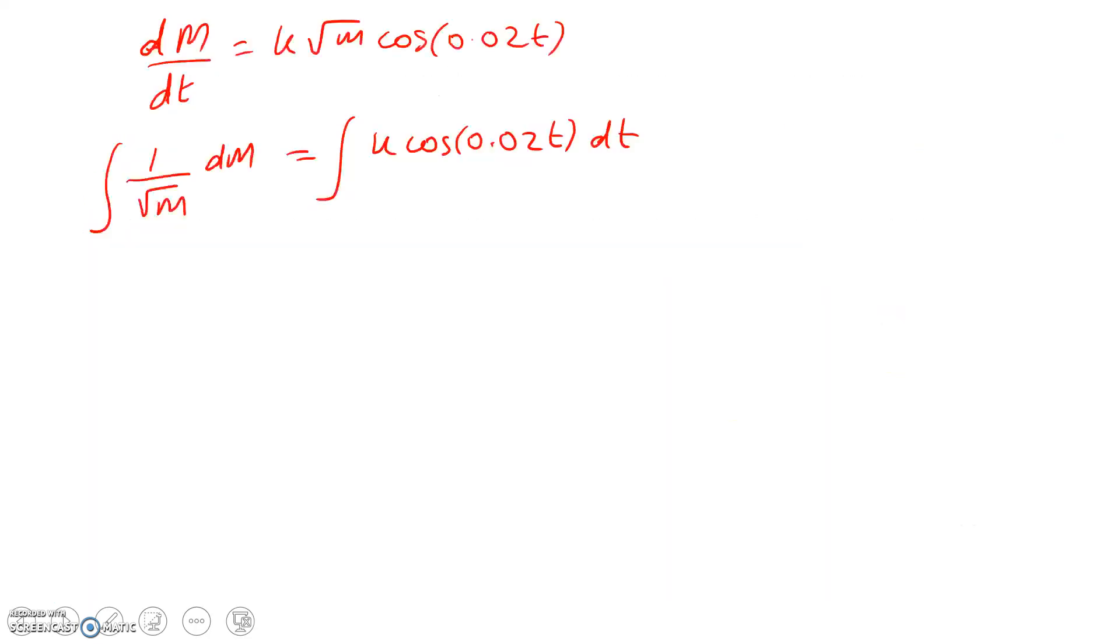So we get 1 over root M dM is equal to k cos(0.02t) dt. Alright, so we've separated the variables, and now we're going to rewrite the left-hand side with a fractional power so we can see what to do next. So there's that bit, and we can go ahead now and anti-differentiate the right-hand side because that's not too bad. So that's going to be sine of 0.02t. We need to have k, and we're going to divide by 0.02. If you look at that, that's because when I use the chain rule and differentiate this, I'll get cos of 0.02t times the derivative of that. So to undo that, we need to divide by 0.02.